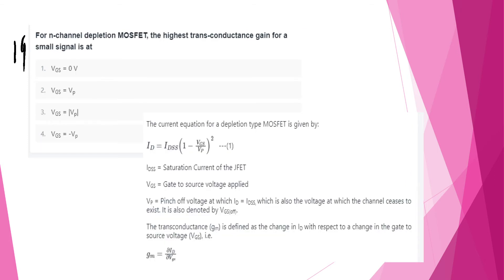For an N-channel depletion MOSFET, the highest transconductance gain for a small signal occurs at Vgs = 0. Transconductance is very important. The output equation of MOSFET and the transconductance formula will explain this further.